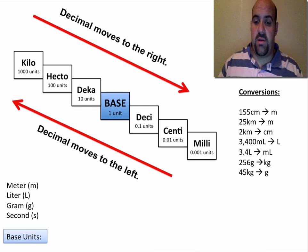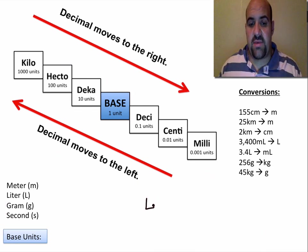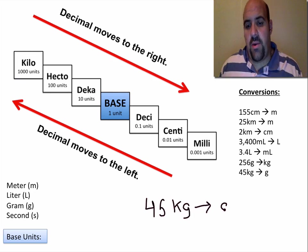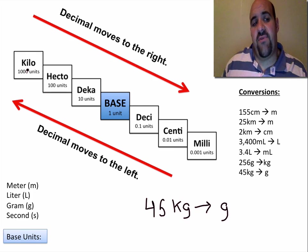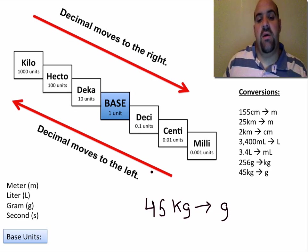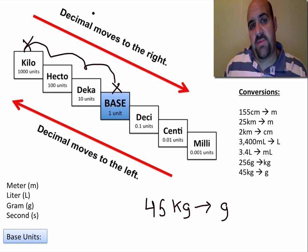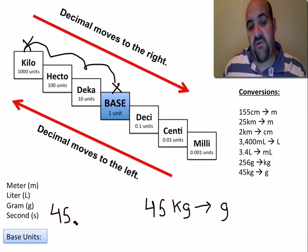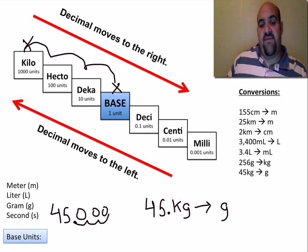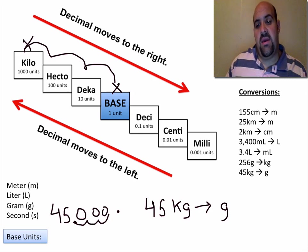The last one: 45 kilograms to grams. When you get good, you know kilo means 1,000, so if you have 45 of them that should be 45,000 grams. But let's work it out. We're starting with kilograms and gram is a base unit, so we go down one, two, three steps to the right. The decimal on 45 moves one, two, three places — and again, 45 kilograms is 45,000 grams.